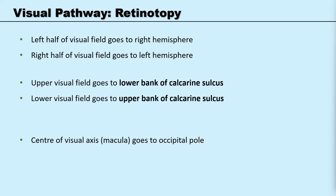This means that the left half of the visual field will go to the right hemisphere and the right half of the visual field will go to the left hemisphere. The upper half of the visual field will go onto the lower bank of the calcarine sulcus, and the lower visual field will go onto the upper bank of the calcarine sulcus. But why? Well, that will be explained in a second.